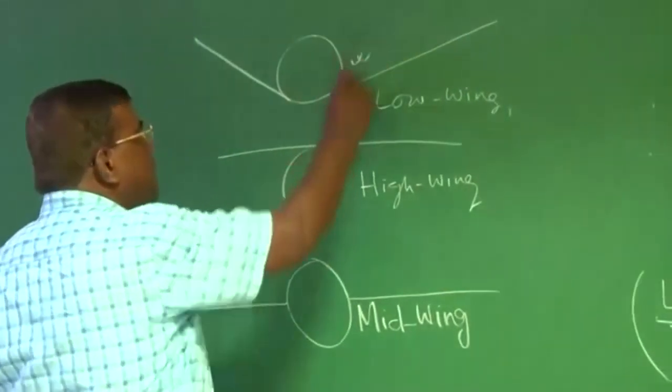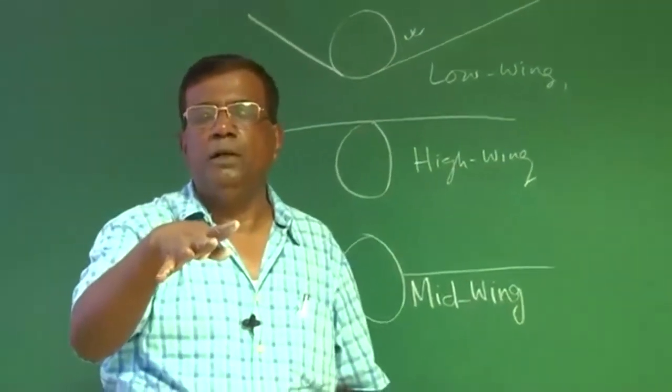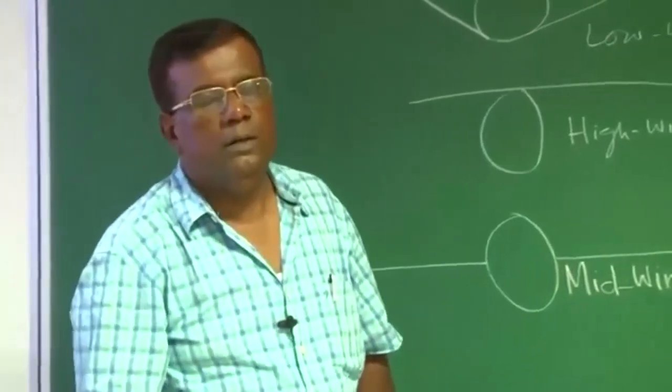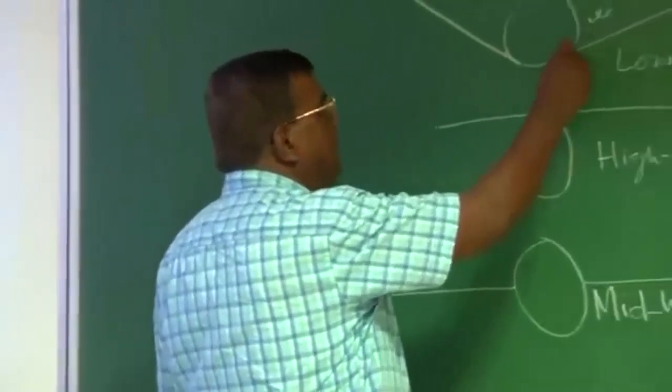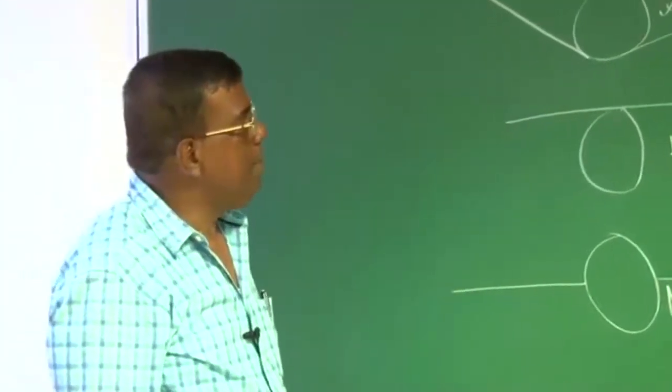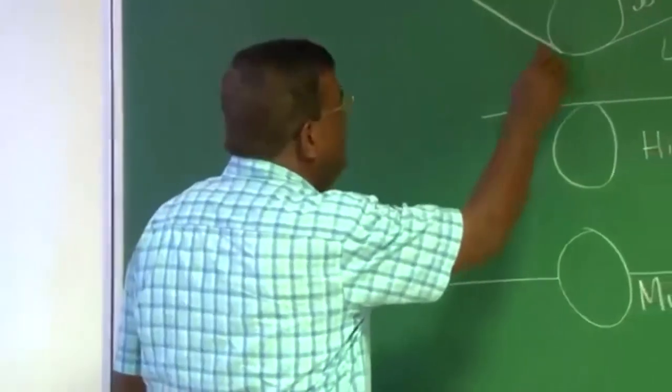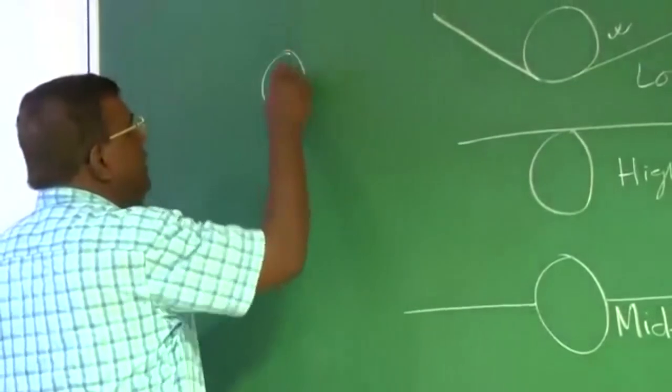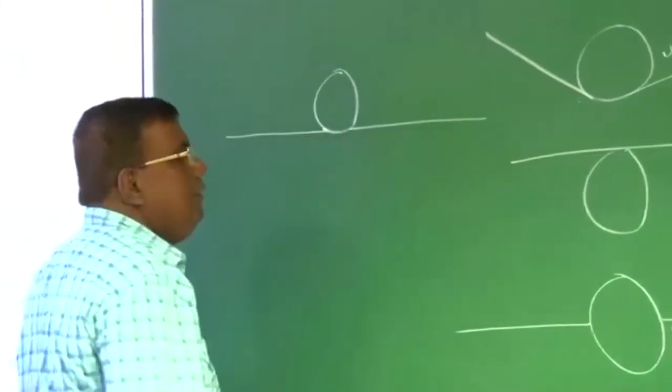Which you know in terms of CL beta less than zero. For low wing, it is reverse. If it banks, the contribution from the wing will make it further roll or further bank because it is laterally unstable. It is laterally unstable as far as low wing is concerned.